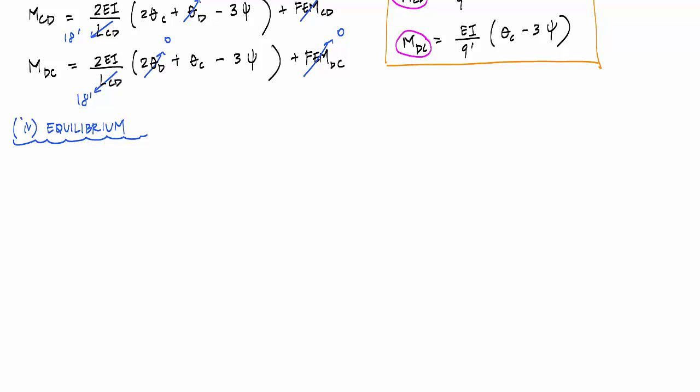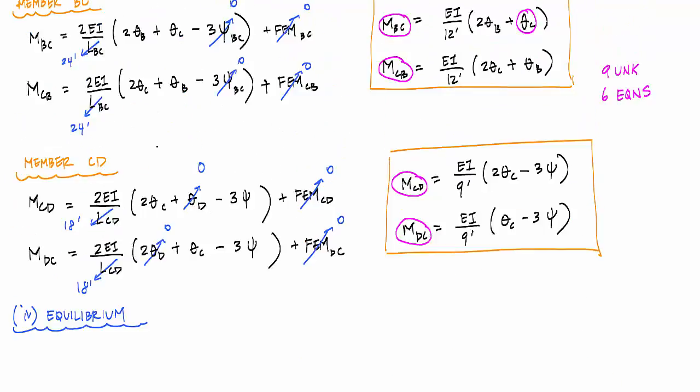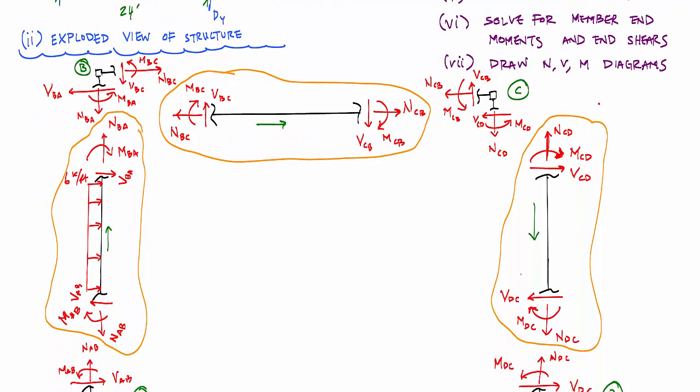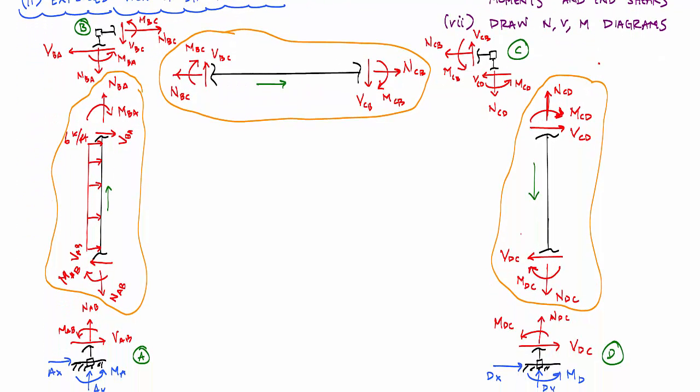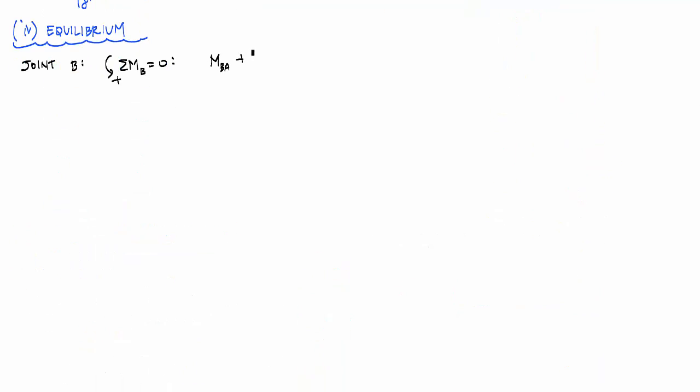The first place to look for equilibrium is at each joint. If I look way back over here in my exploded view, at the free joints that are free to rotate and move around, I want to look at joint B and joint C. I want to sum moments about each of these joints for the equilibrium equation. If I sum moments about joint B, I would get M_BA plus M_BC equals zero. And then similarly for joint C, if I sum moments about joint C, I would get M_CB plus M_CD equals zero. So there's two more equations. I need one more.